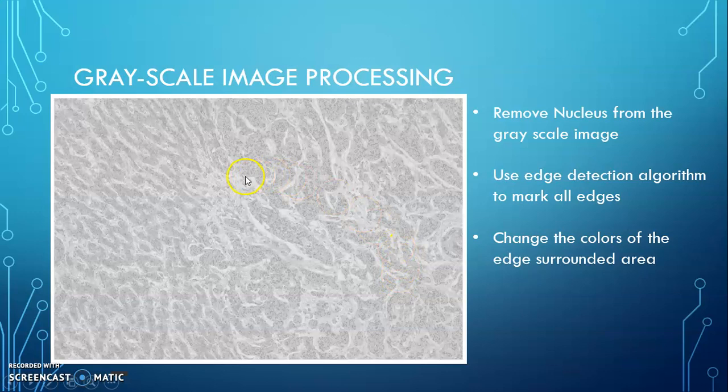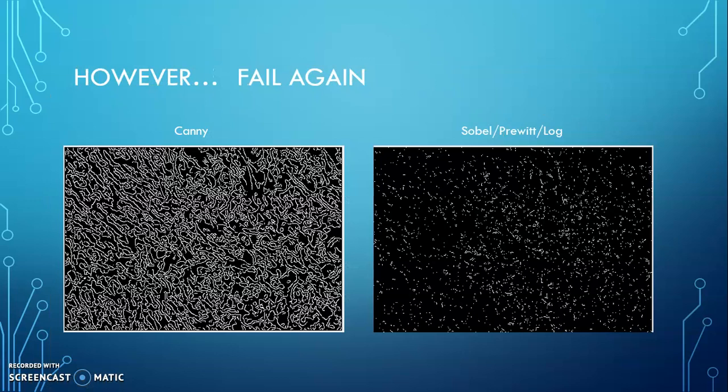In this image, I have taken off all the nucleus from the cells. We can see that this part is very large and irregular and also this part. But here we could see that it's regular and thinner. So I believe if I use the edge detection algorithm to mark all the edges, we could easily see the differences between these two parts. So I did that. And this is the result.